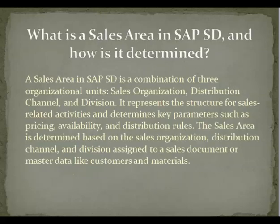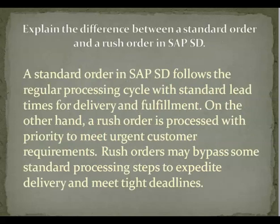What is a sales area in SAP S.D. and how is it determined? Answer: A sales area in SAP S.D. is a combination of three organizational units: sales organization, distribution channel, and division. It represents the structure for sales-related activities and determines key parameters such as pricing, availability, and distribution rules. The sales area is determined based on the sales organization, distribution channel, and division assigned to a sales document or master data like customers and materials.